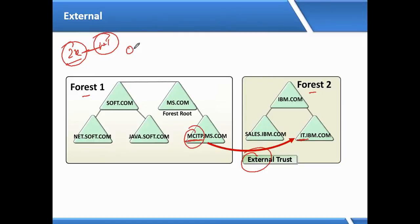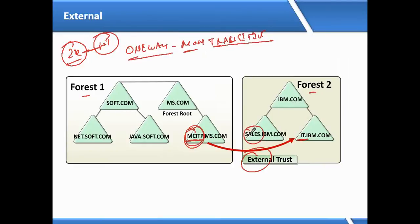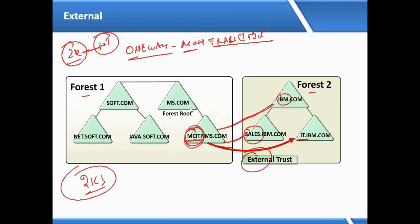External trust is a one-way, non-transitive trust. That means if the mcitp user wants to log into another domain like sales, he cannot — I have to configure one more trust. For each and every domain, individually we have to establish a trust, which is very complex. So Microsoft introduced one more trust in 2003 called forest trust. External trust is one-way, meaning only one direction of access is established.